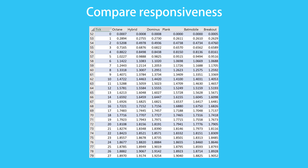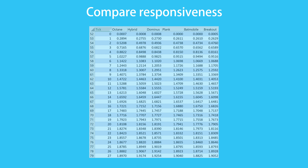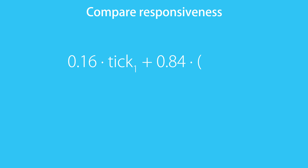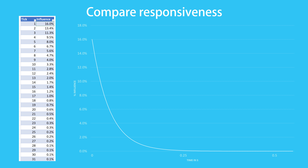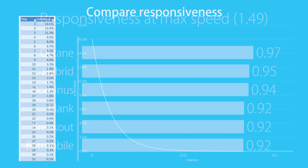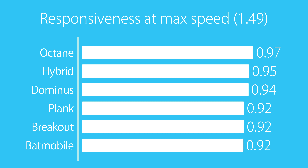Rather than that I went with a soft limitation. My new stat works like this: the very first tick makes up 16% of the total result, the remaining ticks make up 84%. Then that 84% will be split into 16% and 84% recursively. That way the first tick has an impact of 16%, the second 13%, the third 11% and so on. 16% was chosen based on the average perception of the people that provided coherent data in the survey. The octane comes out as the winner by about 2-3% ahead of the hybrid and dominus. The rest of the pack is about 6% worse than the octane.